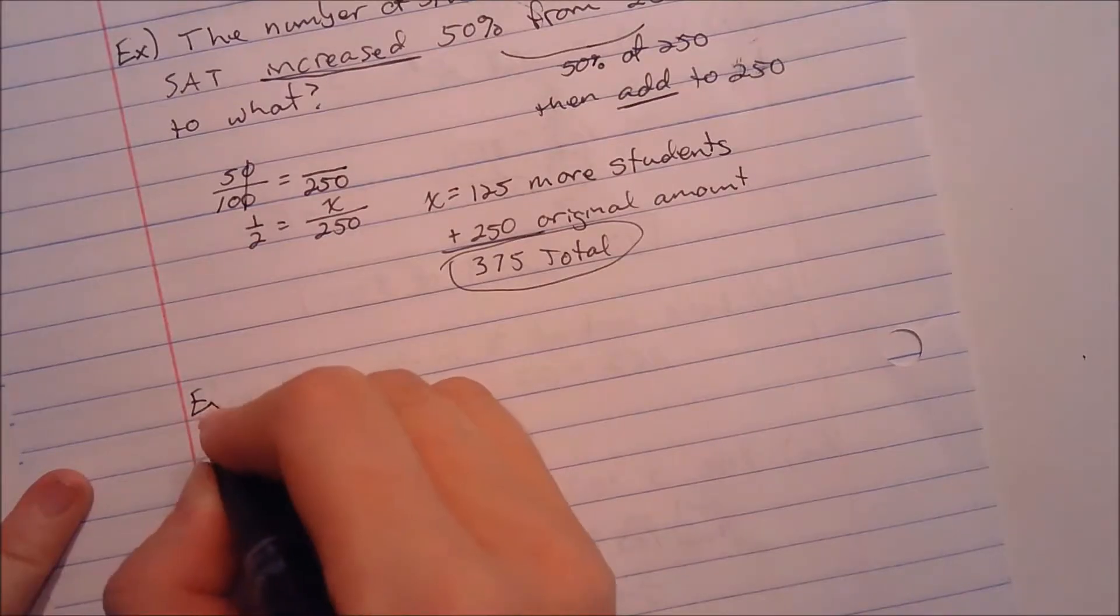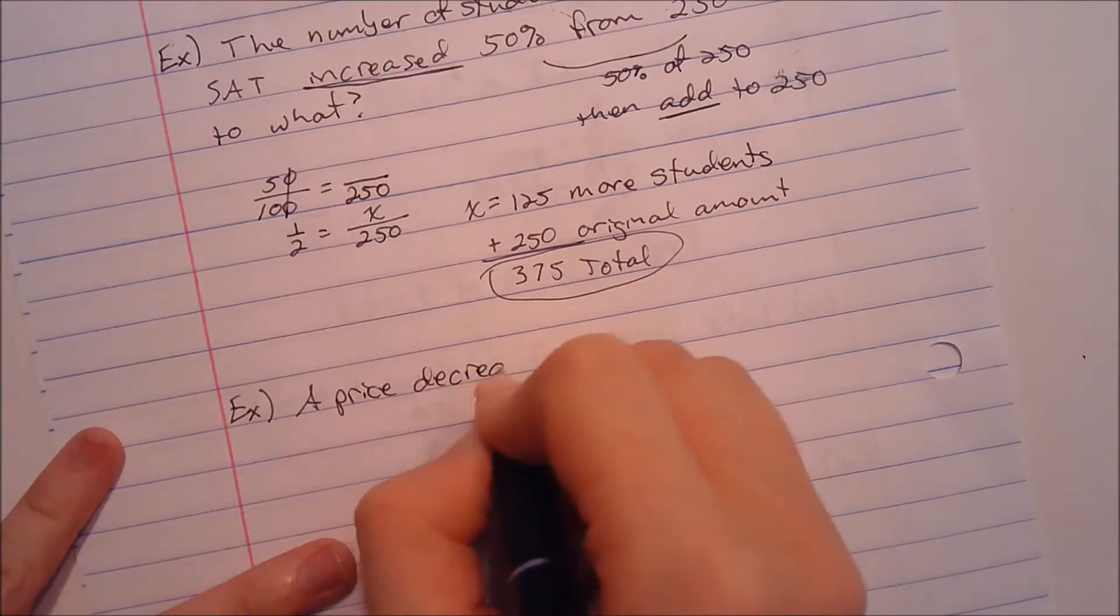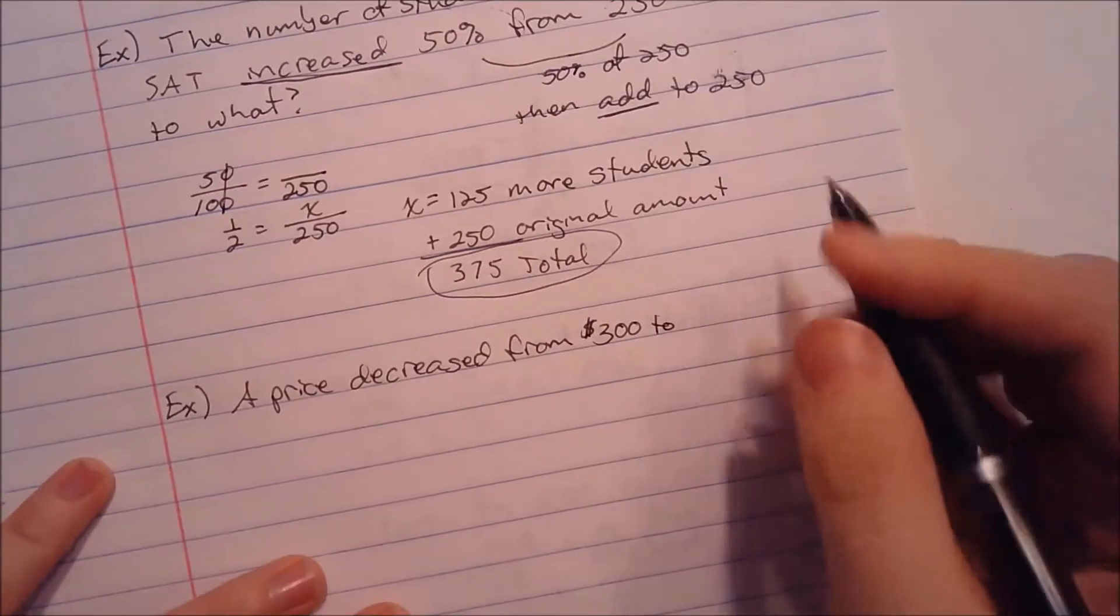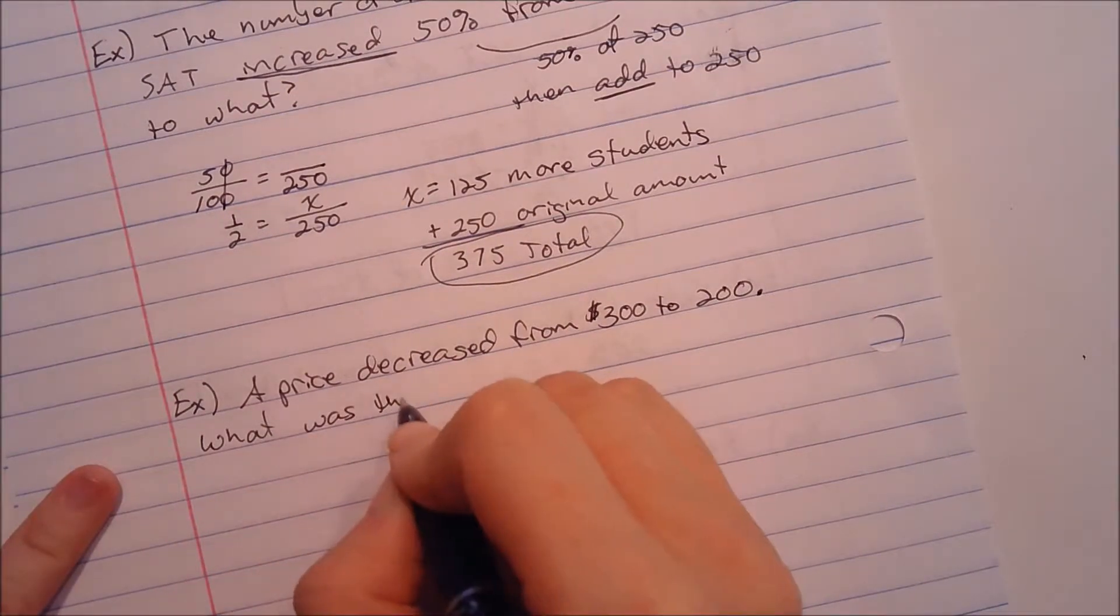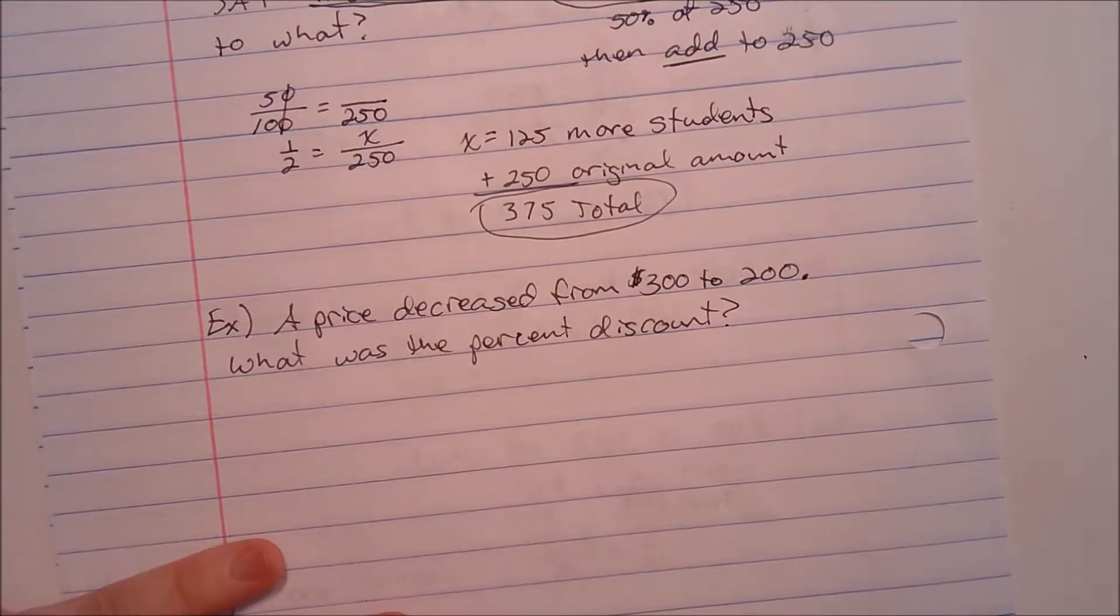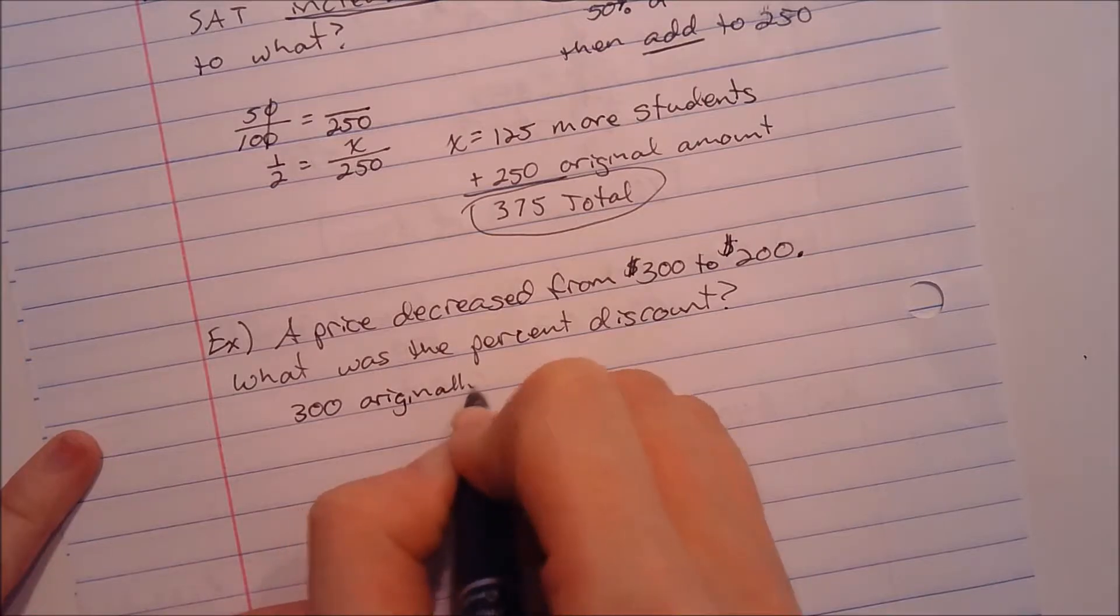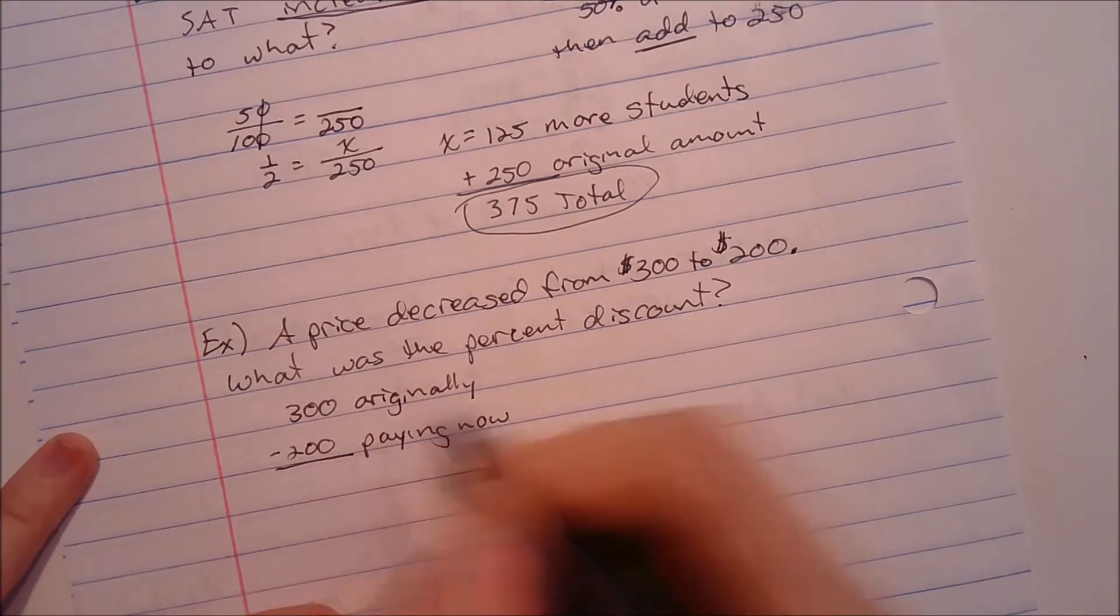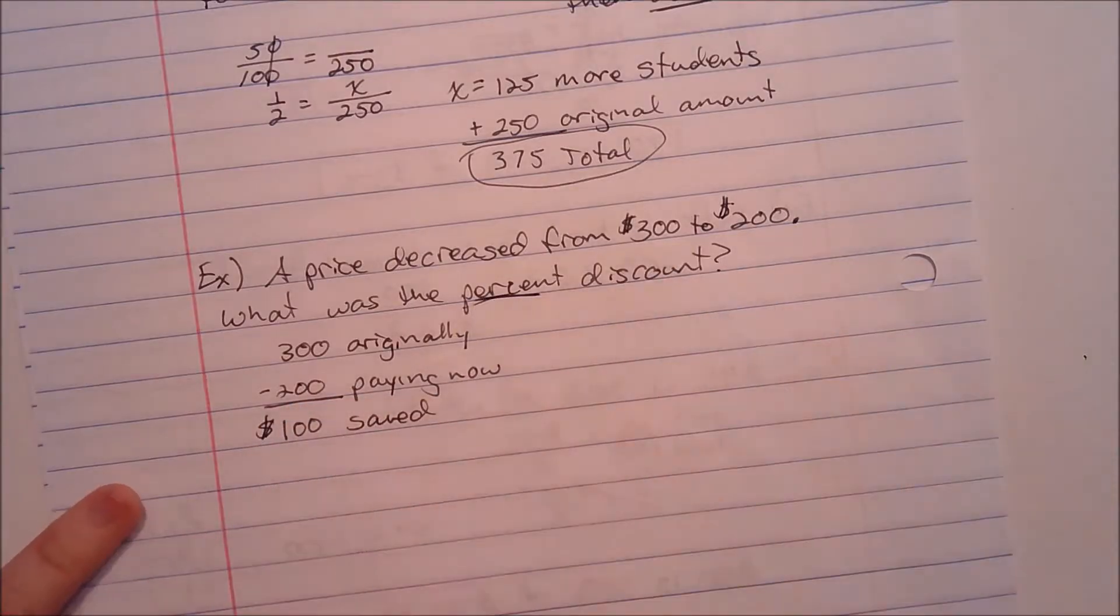Let's try another one. I'm going to get a decrease this time. Let's say a price decreased from $300 to $200. What was the percent discount? First of all, what was the discount in dollars? We paid $300 originally and we're now paying $200. We must have saved $100. We know we saved $100, but that's not a percent. I need to turn that into a percent.